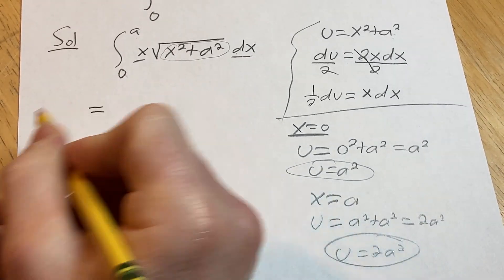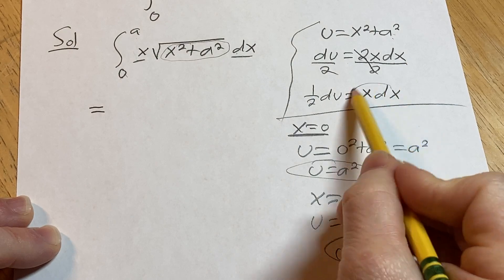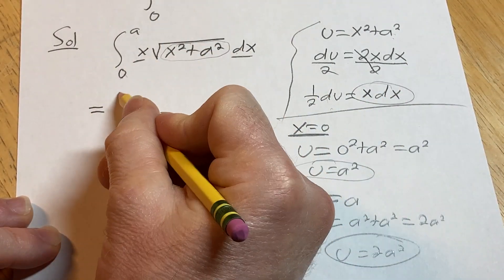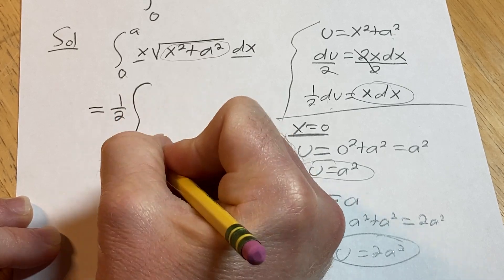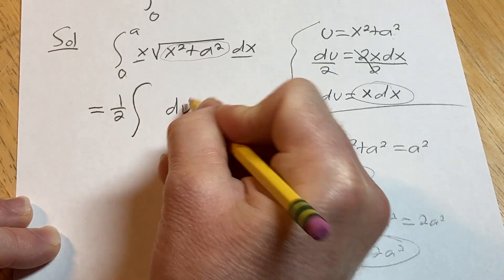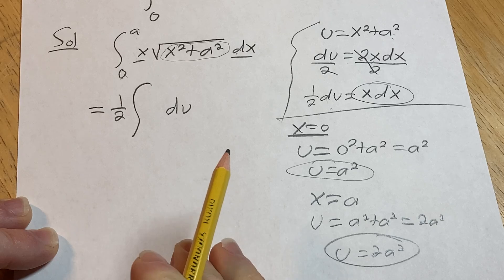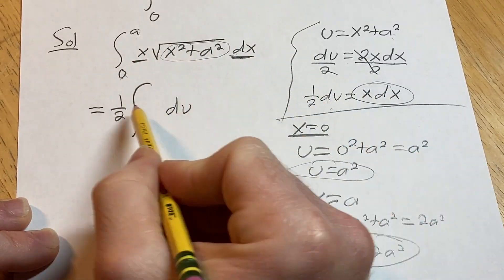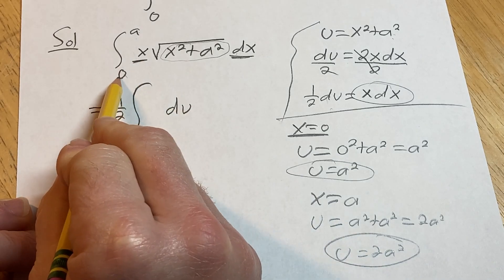All right, coming back up here, this is equal to, so let's see, x dx was 1 half du. So I'm going to pull out that 1 half. And then here we have our du. So far, the only thing that I've replaced in this problem is the x and the dx, right? That's with 1 half du.